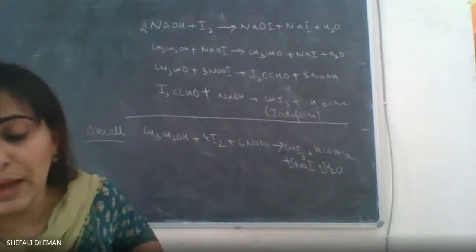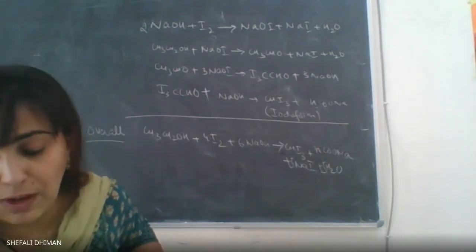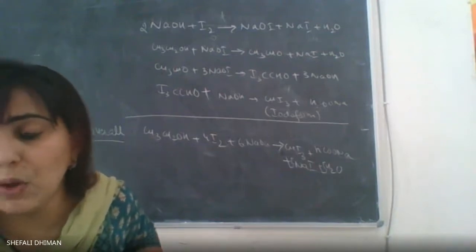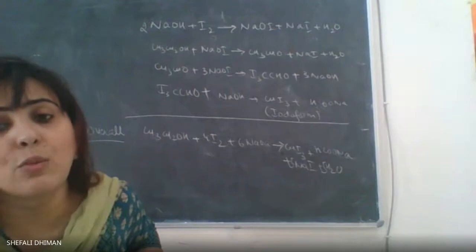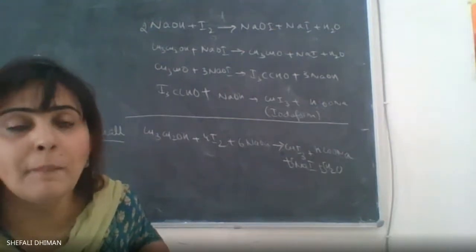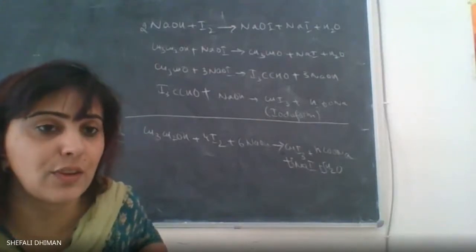It is prepared by treating ethanol in the presence of iodine. We take ethanol in the presence of iodine and after initial reaction you would form a beautiful yellow colored Iodoform CHI3.